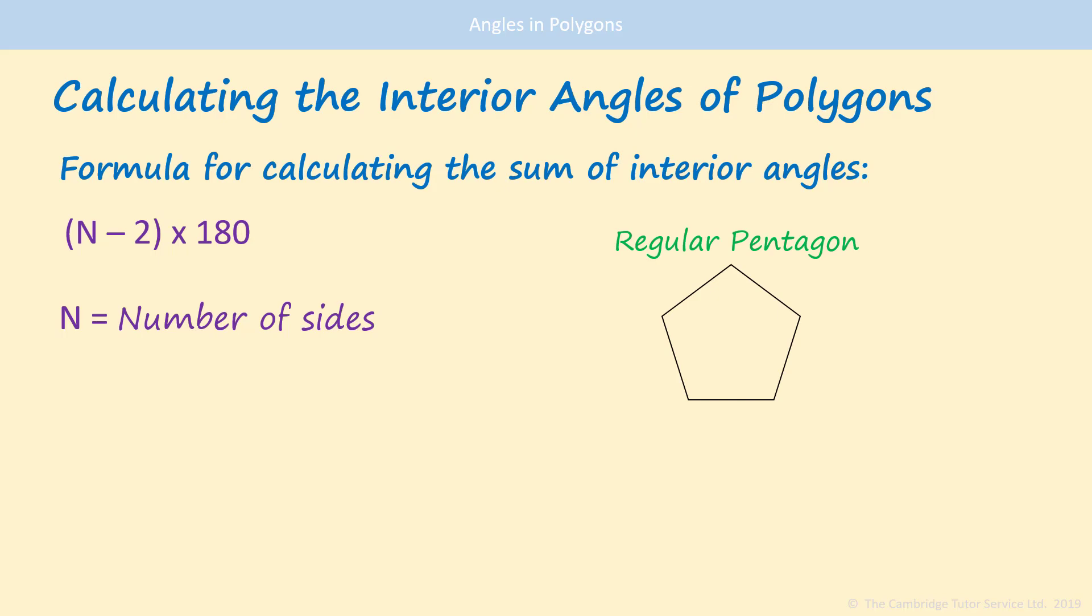So if we have a regular pentagon, that has 5 sides. We put that 5 into the formula, replacing the n. Put the rest of the formula in there. We now have 5 subtract 2 times by 180. So that's 3 times 180, which is 540.